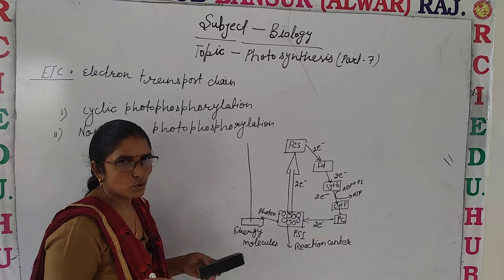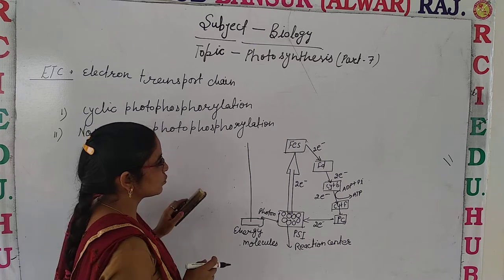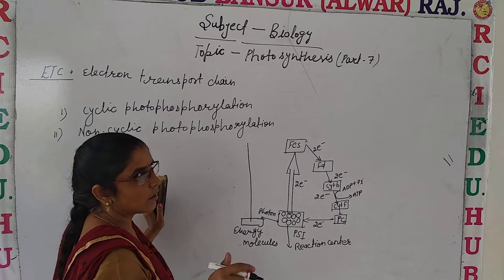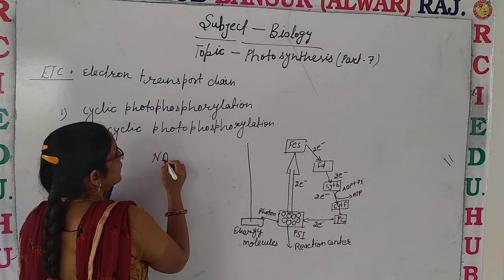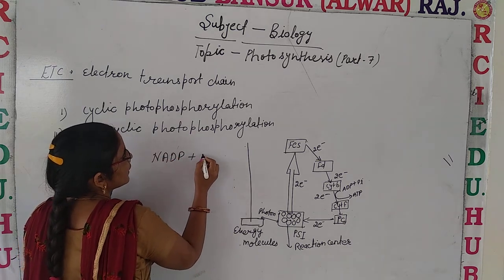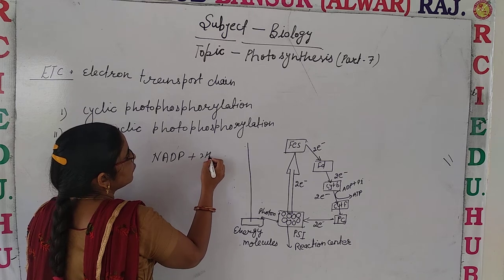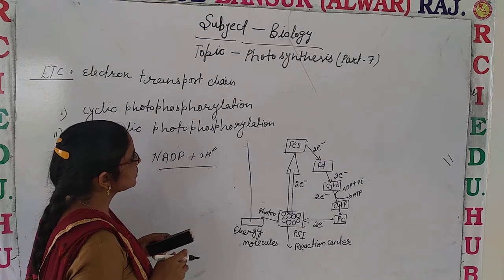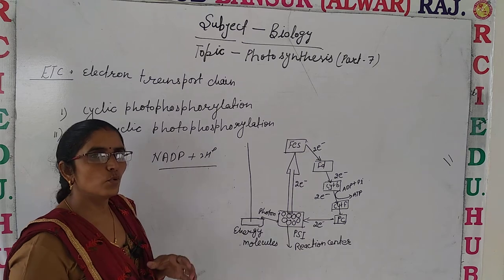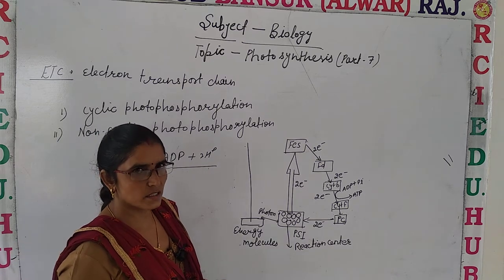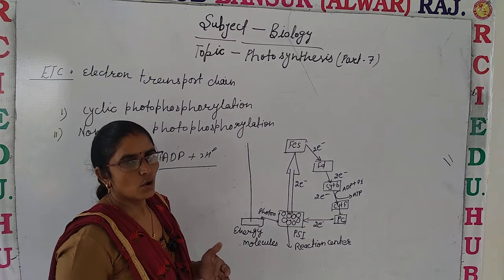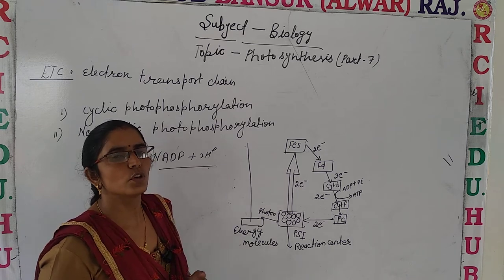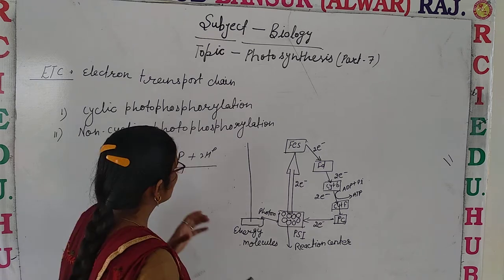Protons and electrons. We were already discussing about the movement of protons — how they get combined with NADP and form NADPH + H⁺. We also discussed that the electrons move through various electron acceptors, and these electrons are utilized in the process of photophosphorylation.